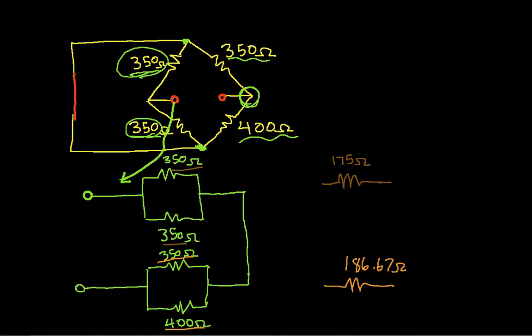And again, I still have the same terminals and the same connections. And now this I can simplify into just a single resistor, whose resistance will be 186 plus 175, which turns out to be 361.67, assuming I've done this correctly.